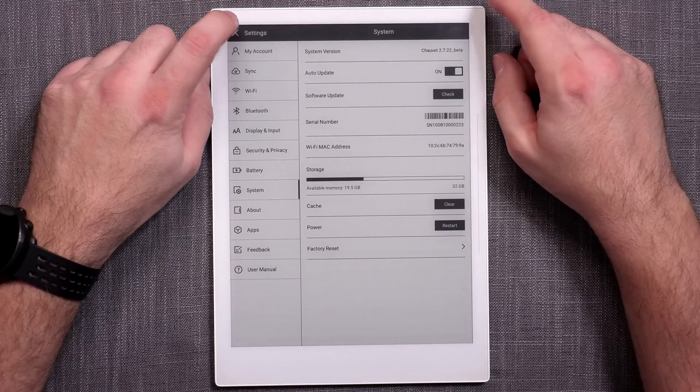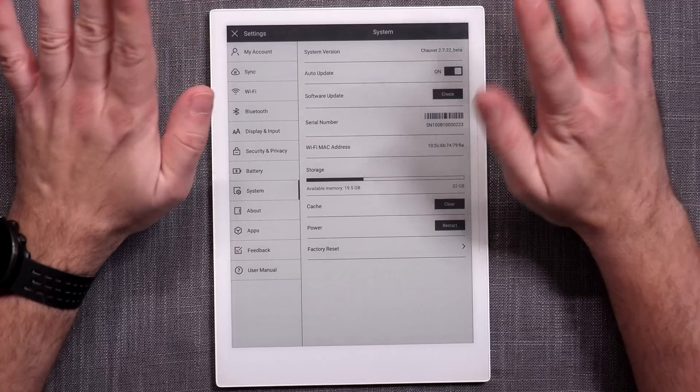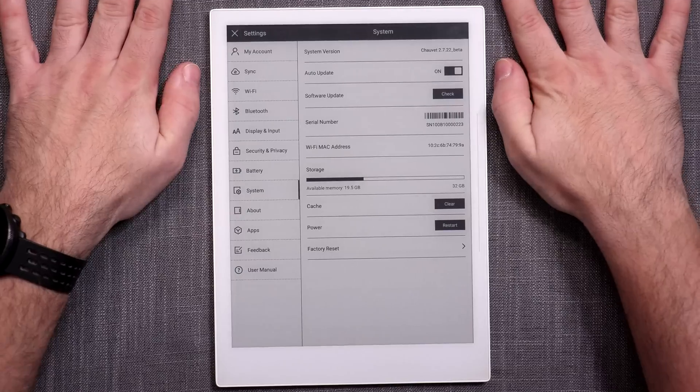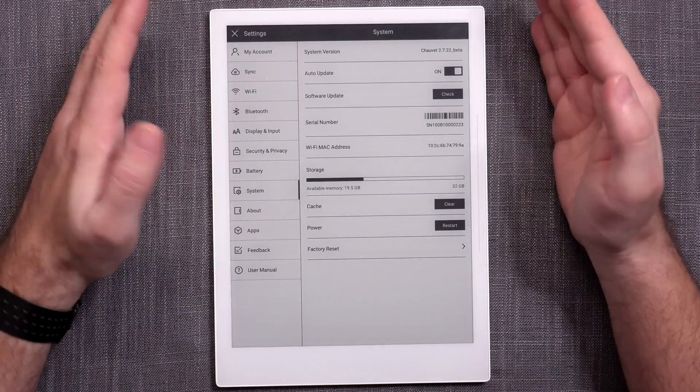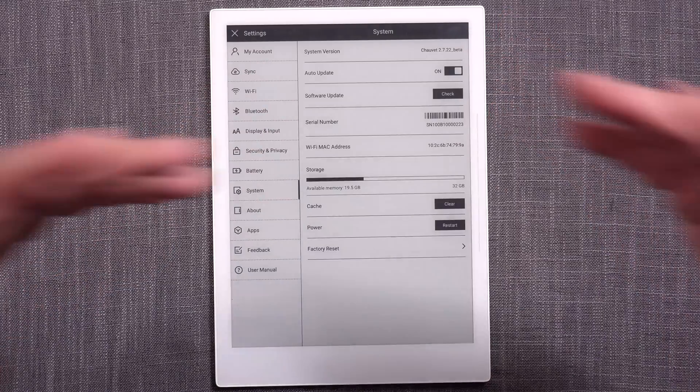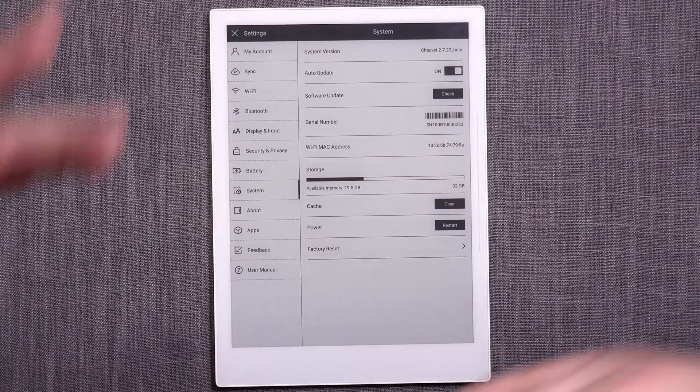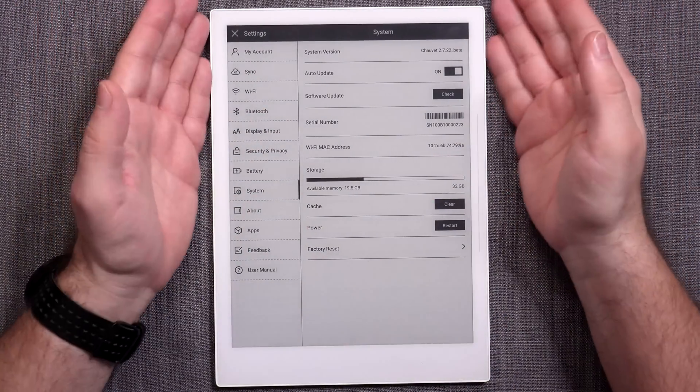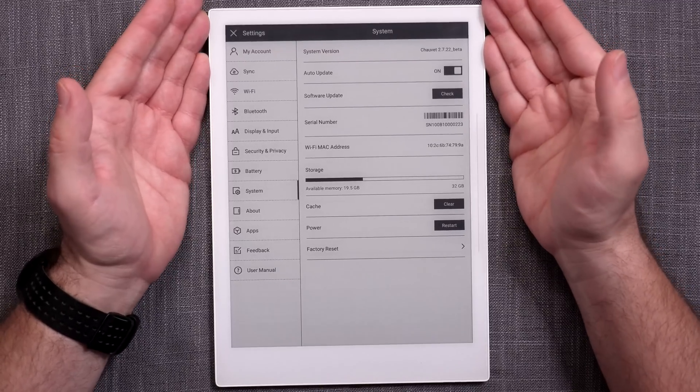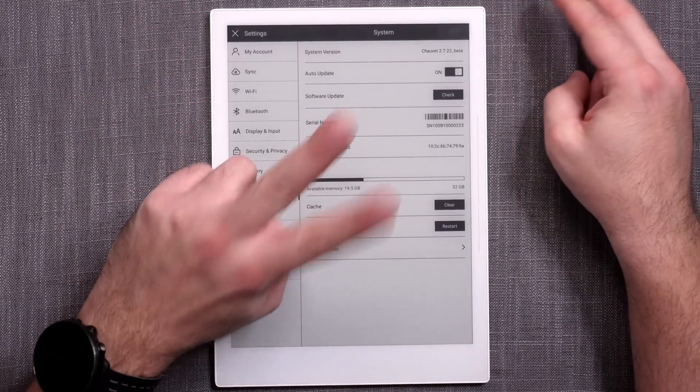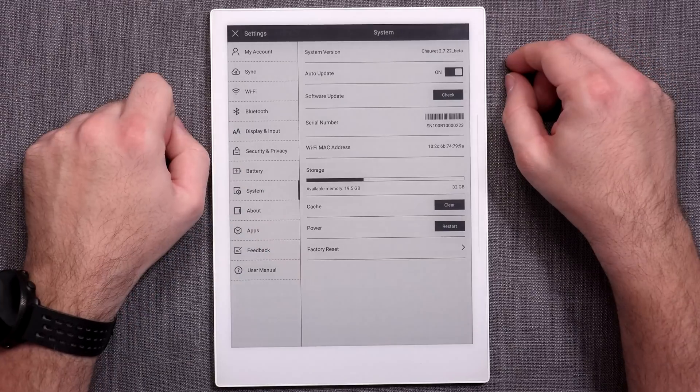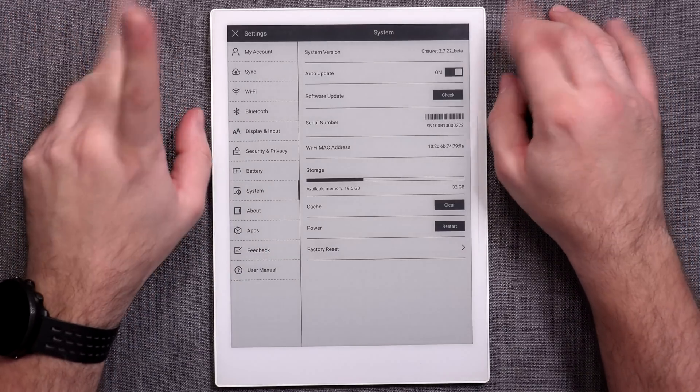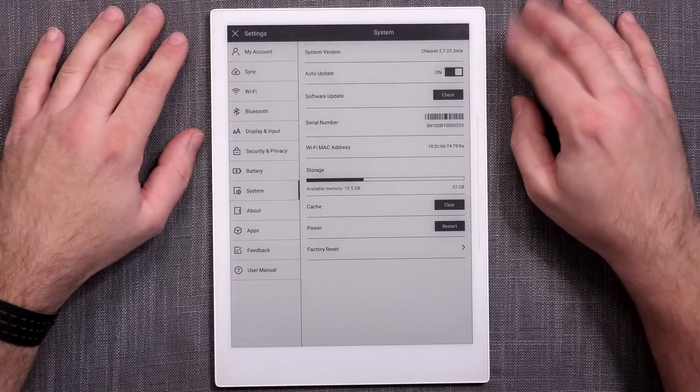All right, here we are and hot on the heels of an extremely exciting release 2.6, or 2.62 I believe it was. This is now 2.6.22. And here it says that it's 2.722 because it's a beta. So it's not officially released yet. It's still in beta. But probably by the time you actually see this video, this should already have released or is rolling out to the users. Now, why is this exciting? Well, for many, many reasons.